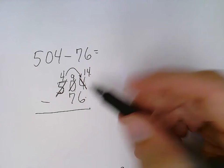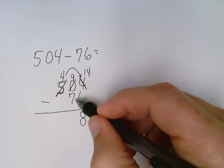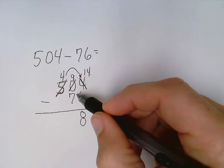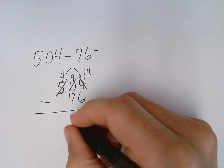So 14 minus 6, I can now do. 14 minus 6 is 8. Go to my next column, ask myself the question: can I do it? 9 minus 7, I can do. 9 minus 7 is 2.